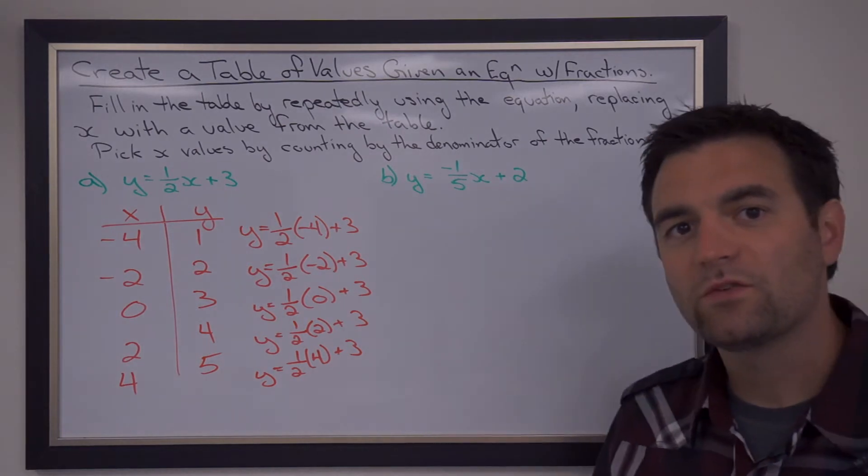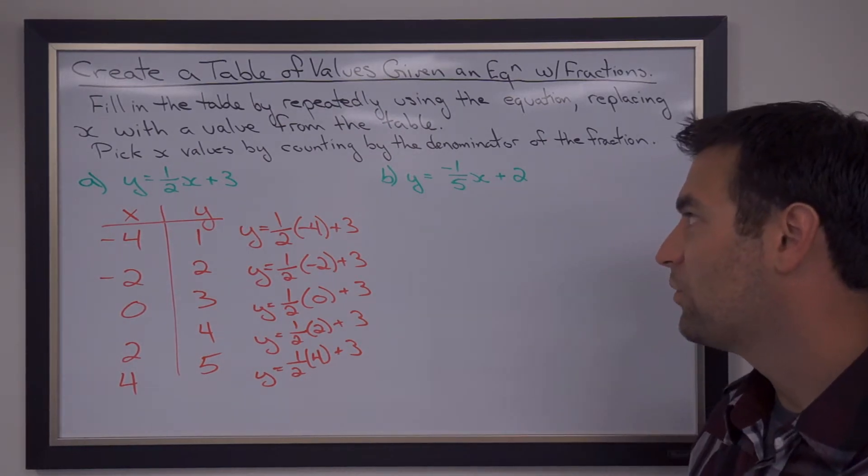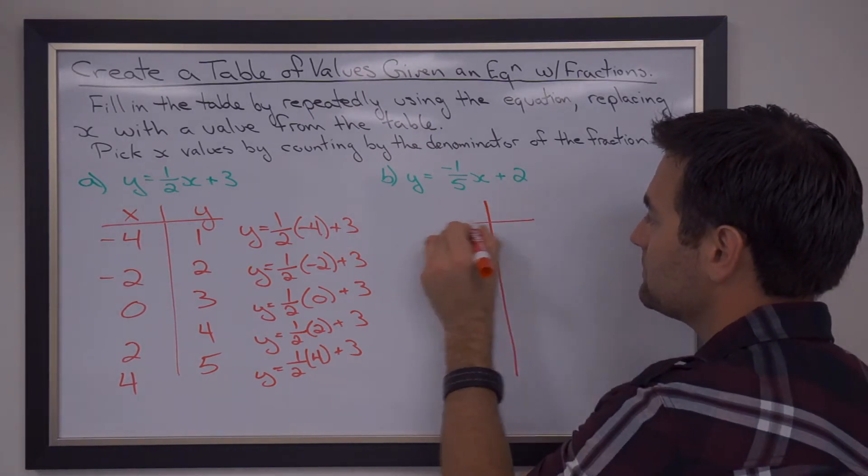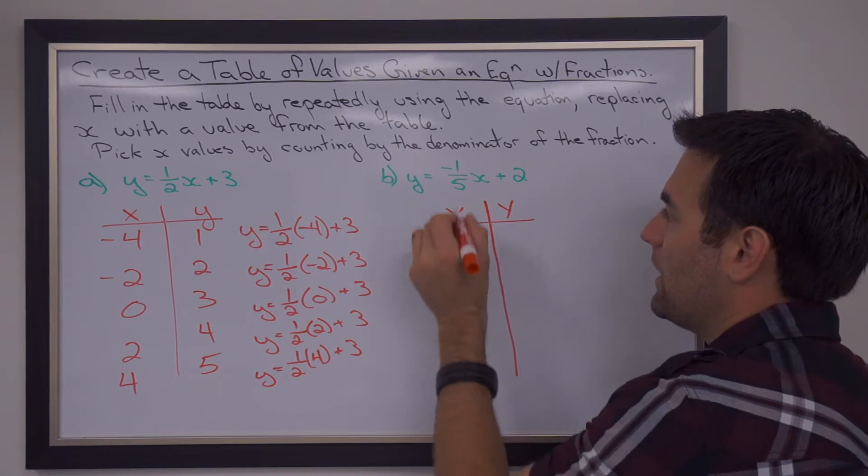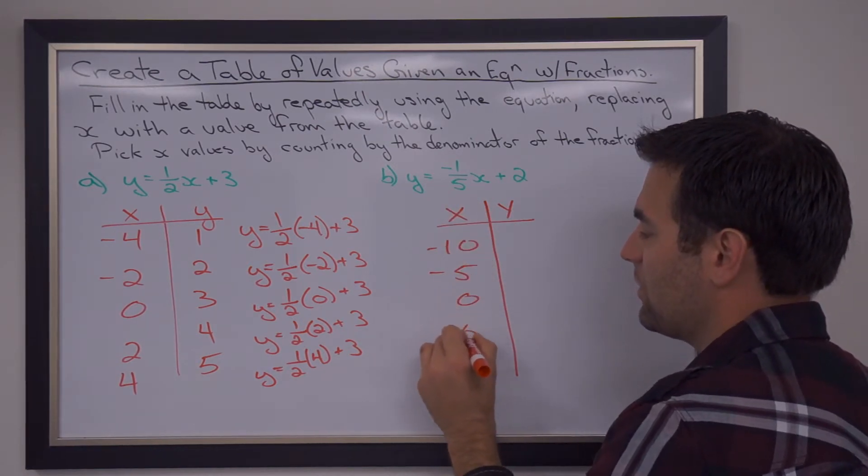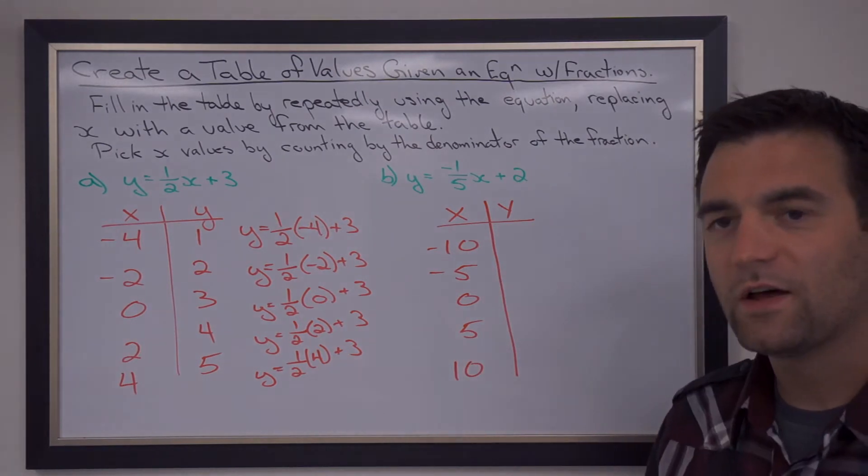The same thing happens here when we have a negative fraction. So here we have negative 1 fifth x plus 2. We set up our t-chart and we count by 5. So it'll be negative 10, negative 5, 0, 5, and 10. That's our x-values.